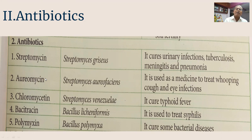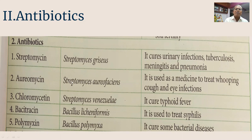The antibiotics include streptomycin, aureomycin, chloromycin, bacitracin, and polymyxin. Streptomycin is isolated from Streptomyces griseus; aureomycin from Streptomyces aureofaciens; chloromycin from Streptomyces venezuelae; bacitracin from Bacillus licheniformis; and polymyxin from Bacillus polymyxa.